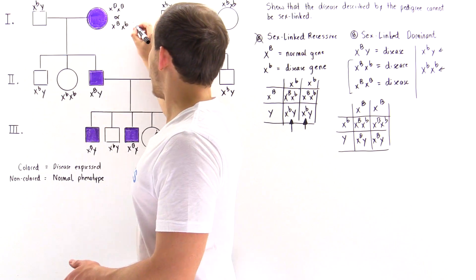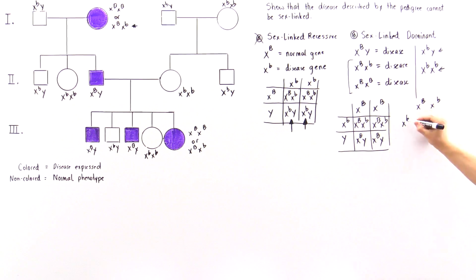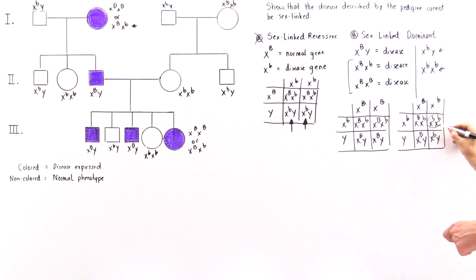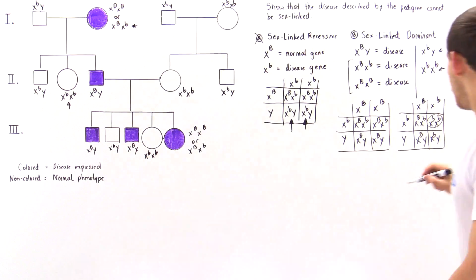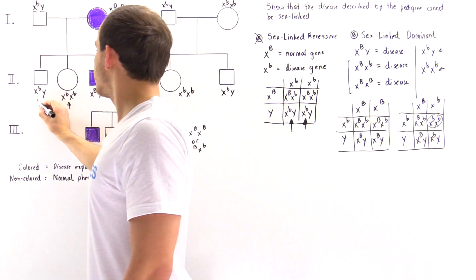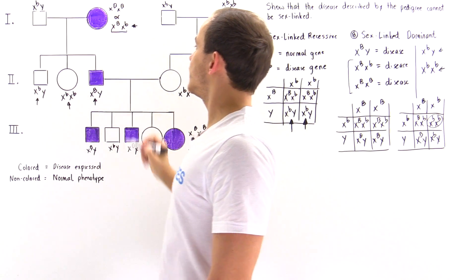Now suppose the genotype is X uppercase B, X lowercase b. Carrying out the Punnett square with egg cells X uppercase B and X lowercase b, and sperm X lowercase b and Y, we get X uppercase B, X lowercase b; X lowercase b, X lowercase b; X uppercase B, Y; and X lowercase b, Y. This gives a 25% chance of each genotype — which is consistent with the individuals shown in this part of the pedigree. So this works, as long as the affected female is X uppercase B, X lowercase b.